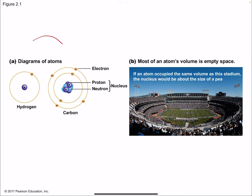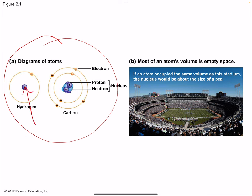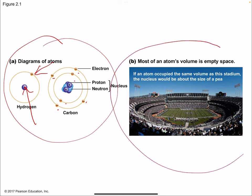Hydrogen has one proton in the middle and one electron in its orbital. Carbon has six electrons and six protons and six neutrons. If an atom occupied the same volume as a stadium, the nucleus would be about the size of a pea — so an atom is predominantly empty space, with tiny protons and neutrons in the center and electrons on the outside.